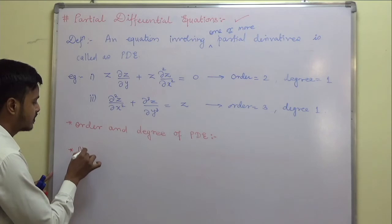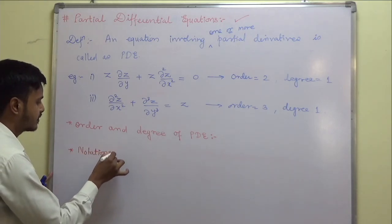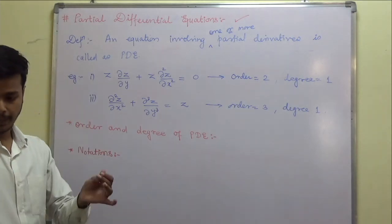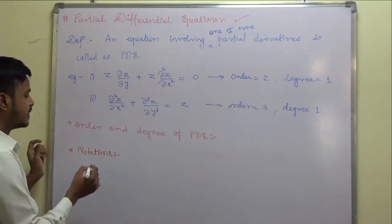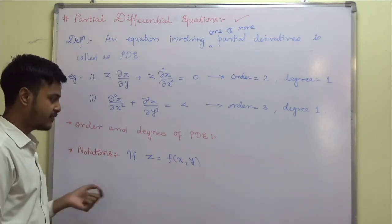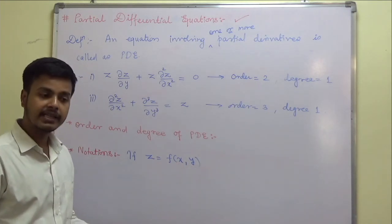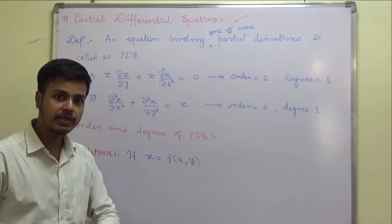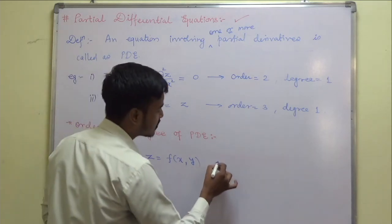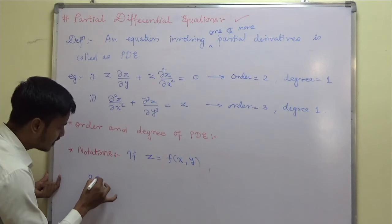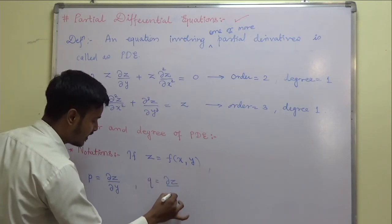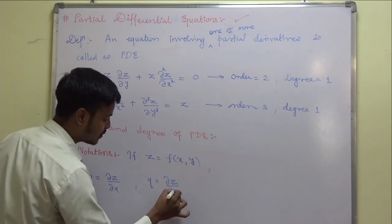Next are the notations. If z equals f of x, y is a function of two variables where z is dependent and x, y are independent, we will use the following notations throughout this chapter. P is equal to del z by del x. Q is equal to del z by del y.